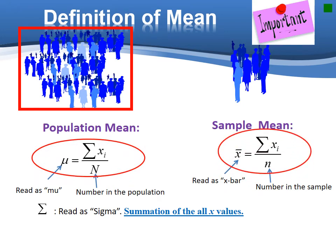Here is the definition of mean. We have population mean and sample mean as follows. Mu is the population mean, while sigma is the summation of all x values, and N is the number in the population. Sample mean is denoted as x bar, and n is the number in the sample.